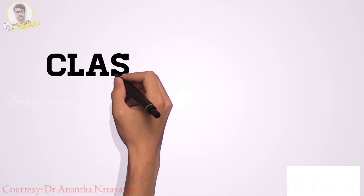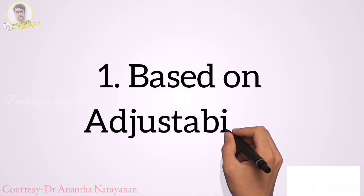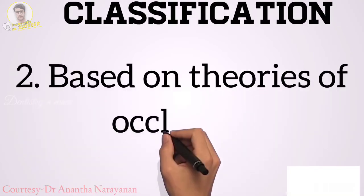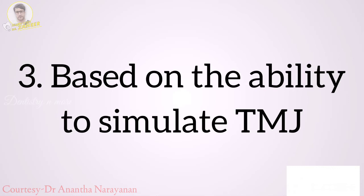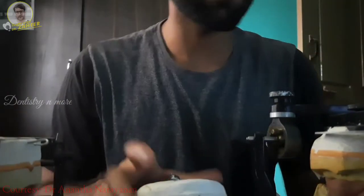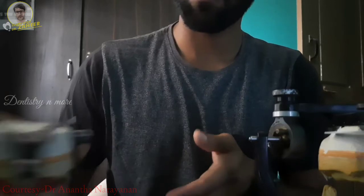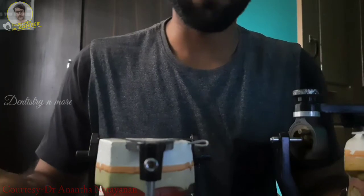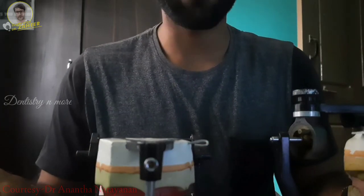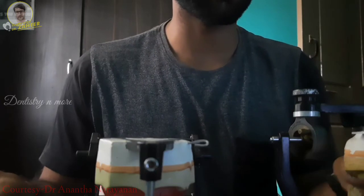Moving on to the major classifications of articulators. There are three classification bases: first, based on adjustability; second, based on theories of occlusion; third, based on the ability to simulate the TMJ. I have three different types of articulators in front of me, each representing one classification. If we classify articulators based on adjustability, we will classify them as non-adjustable, semi-adjustable, and fully adjustable articulators.